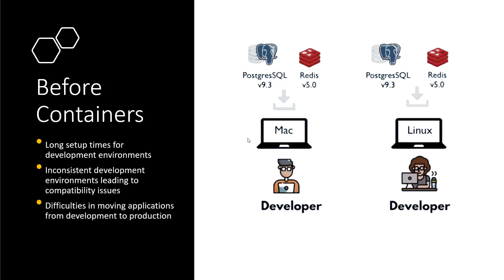These different systems brought about inconsistency across environments and the problem of moving applications from development to production. You'd hear things like 'it works on my system but it's not working in the production environment.' The transition from development to production was often challenging due to discrepancies between environments, causing compatibility issues and unexpected behavior. Another issue was complex management of dependencies and libraries, as different applications require different versions.